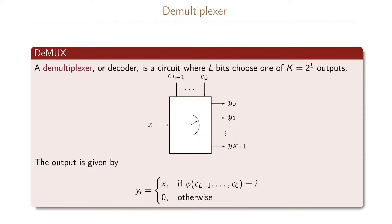A demultiplexer is similar but can be seen as the opposite of a multiplexer. The demultiplexer can also be seen as a decoder. This is a circuit where again we will have L bits that we call cL-1 to c0, that will choose one of 2 to the L outputs.